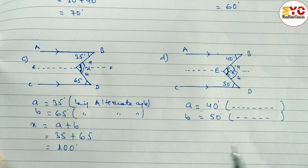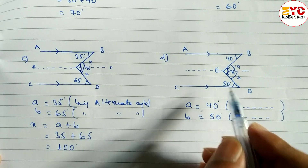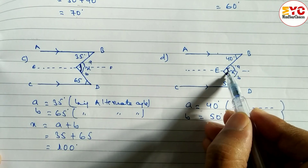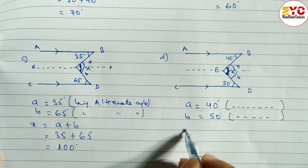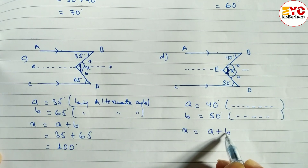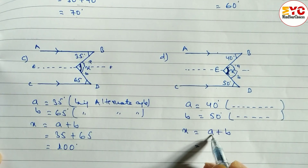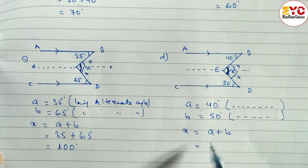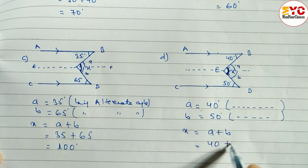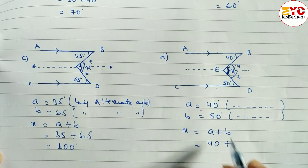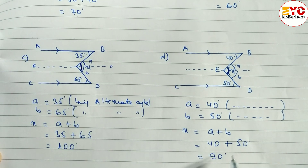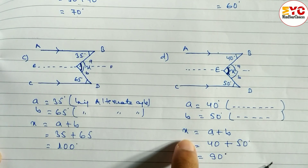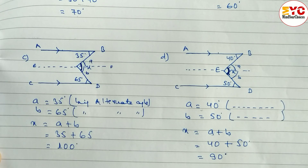Hope you understand. Reason is necessary to write. After that we have to find out the whole value of x. x is equal to A plus B. Value of A is 40 and value of B is 50. When you add, we get 90 degrees. So value of x is equal to 90 degrees.